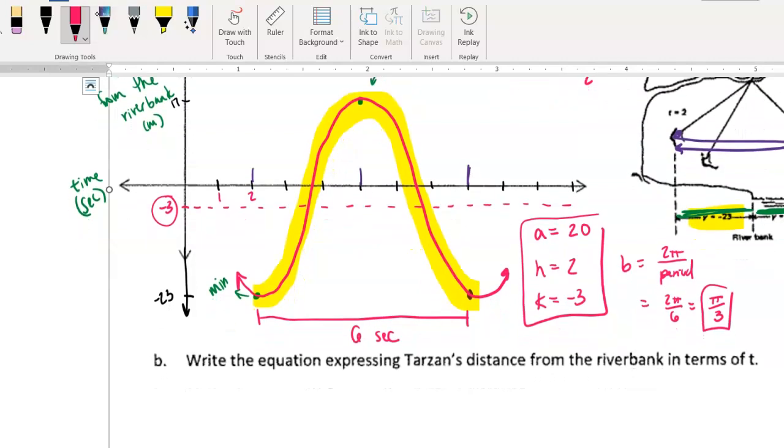So we're going to use these values for our equation. And again, the one thing to remember is this is for the cosine function that's been flipped vertically. So my A value would actually be negative 20. So my equation would be Y equals negative 20 times cosine. Our B value would be π over 3. And then it would be X minus our H value, which is 2. And then plus our K value, so minus 3.